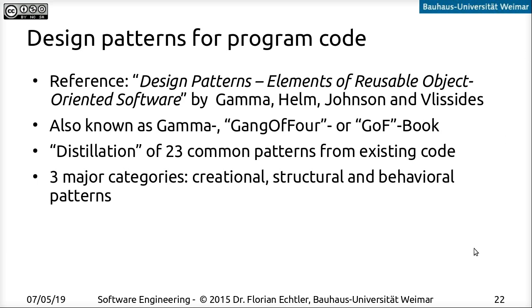Now let's look at design patterns on a lower level. The ones we're going to talk about now are directly for program code, so on a very low level. Basically all of the patterns I'm going to discuss now are from the book shown here, Design Patterns: Elements of Usable Object-Oriented Software. The first author is Eric Gamma, so the book is also often called the Gamma book, sometimes also the Gang of Four book because it has four authors, or the GOF book.